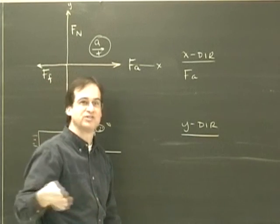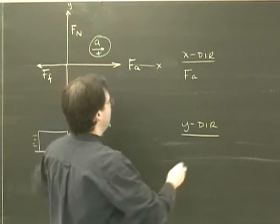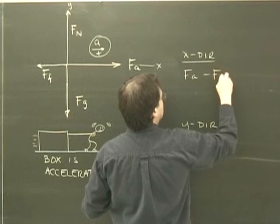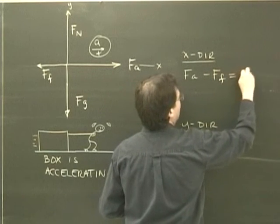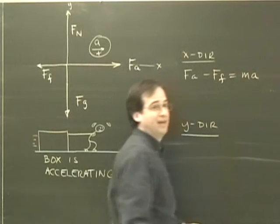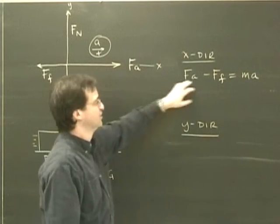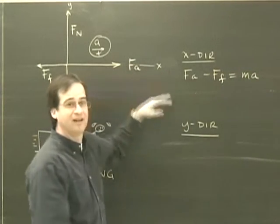Force of friction is the other force in the x-direction and it's negative because it's in the other direction. And Newton's second law says all those forces will add up to ma and that's our direction of acceleration. So this is the equation that governs my x-direction.